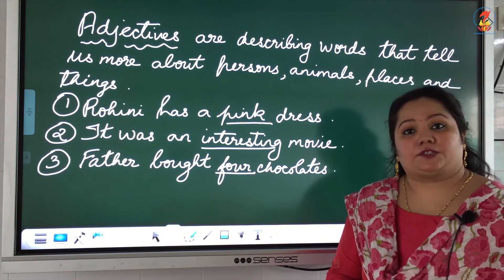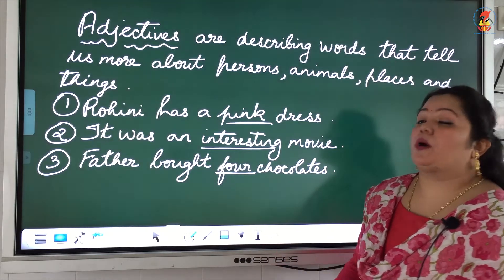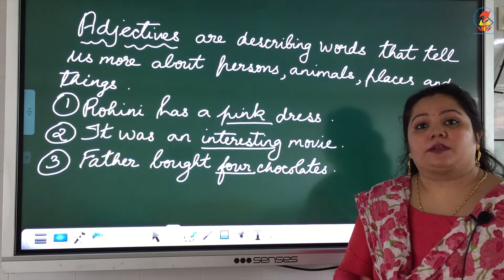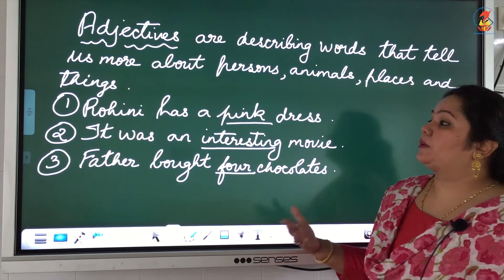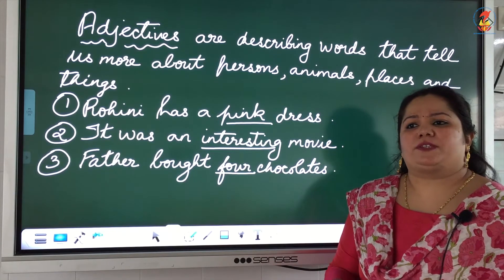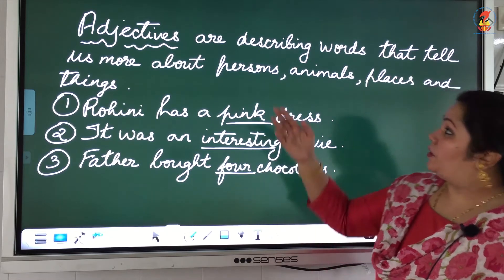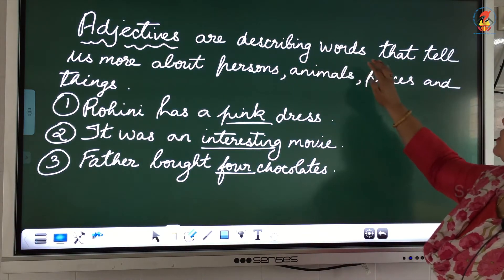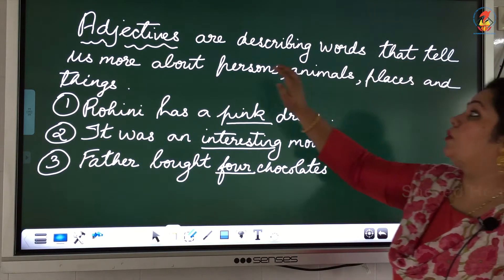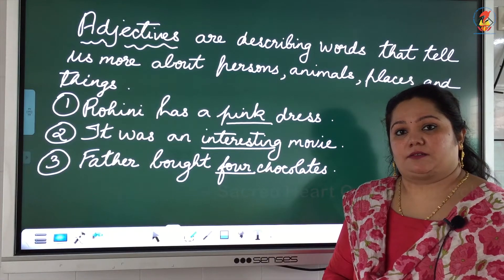An adjective is also known as a describing word. It tells you about what kind of noun we speak about in a sentence. Adjectives are describing words that tell us more about persons, animals, places and things in a sentence.